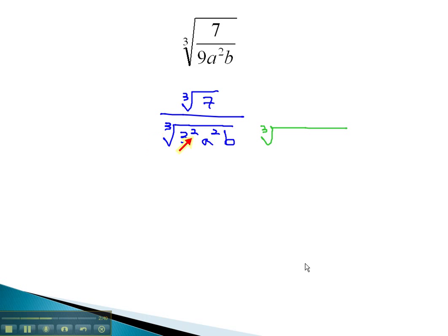We already have 2 of the first factor, 3. To divide by the index of 3, we need 1 more 3. Similarly, with the a squared, we already have 2 a's.